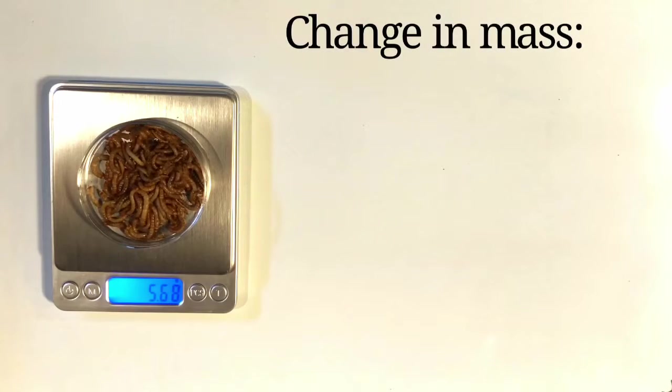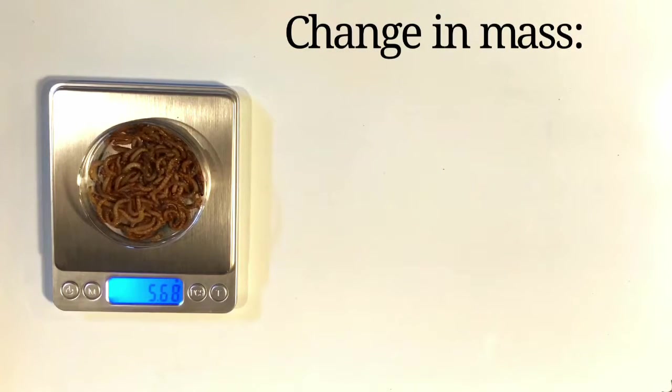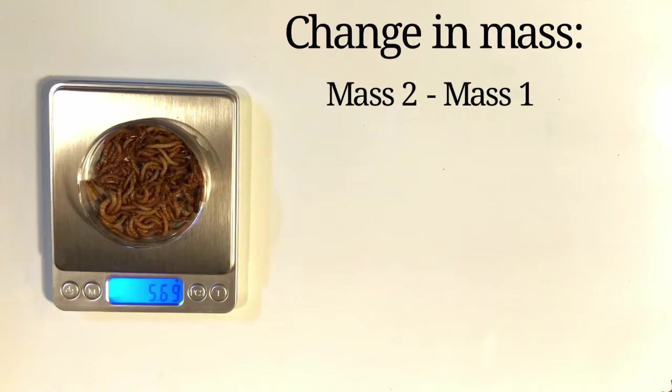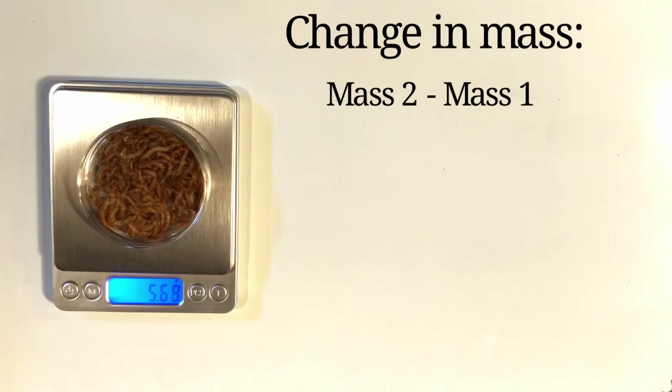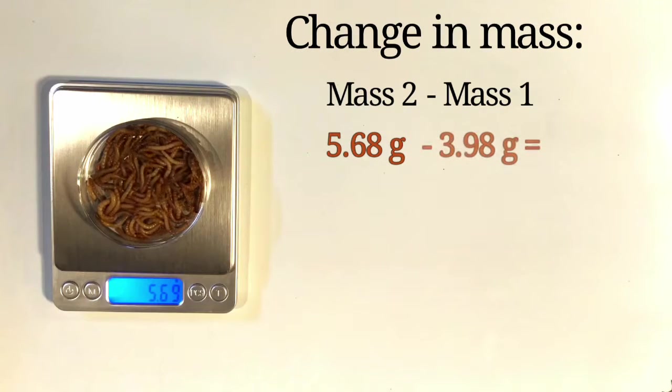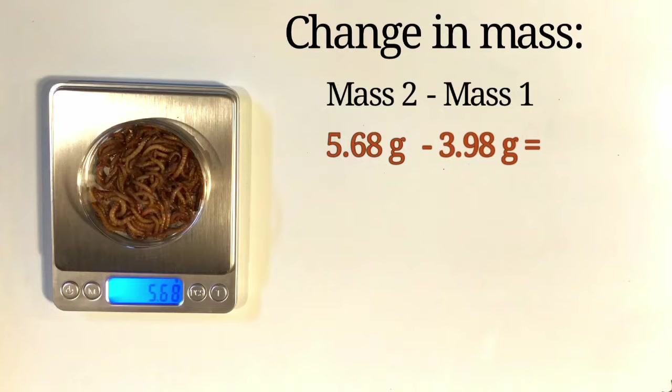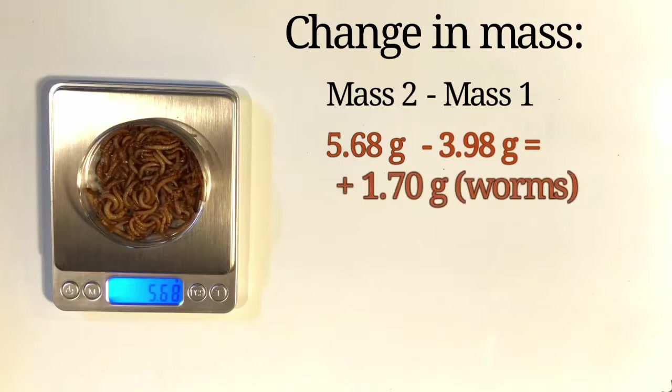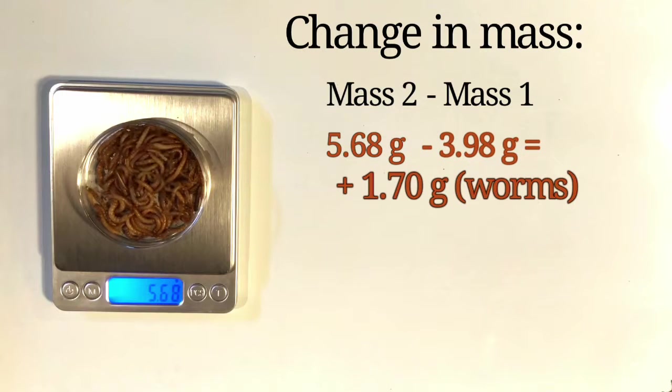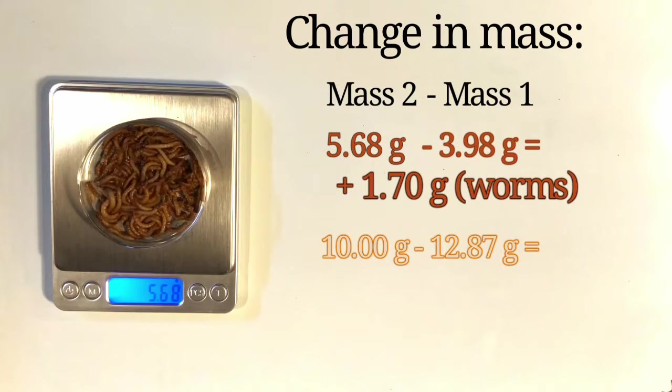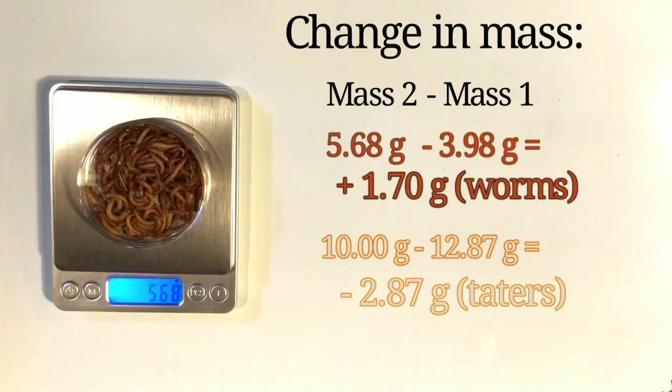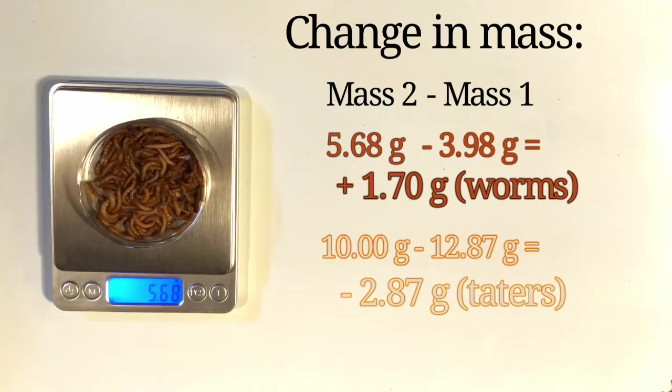Now anytime that there's a mass change, we can find the change in mass by taking the second mass and subtracting the first mass. The worms had a final mass of 5.68 grams, and their starting mass was 3.98 grams, which means that their change in mass was plus 1.70 grams. They got heavier. If we perform the same mathematics for the potatoes, we find that their change in mass was negative 2.87 grams. That means the potatoes lost mass.